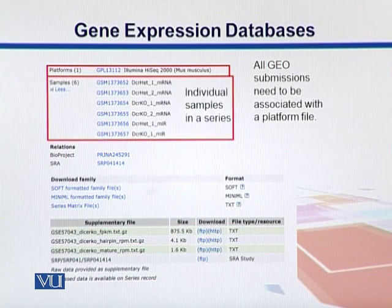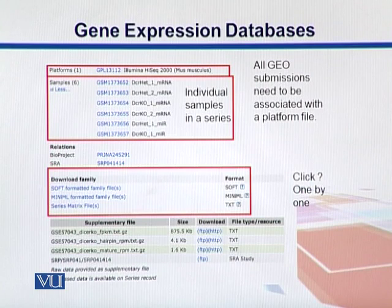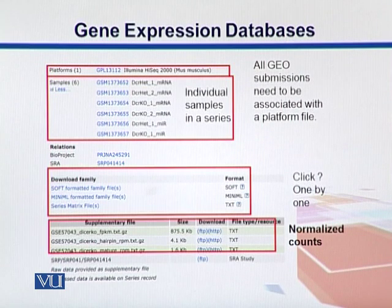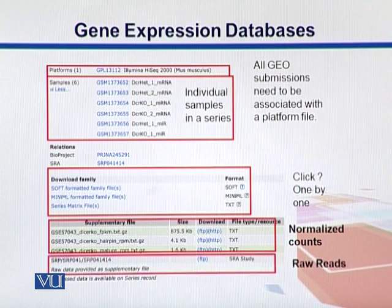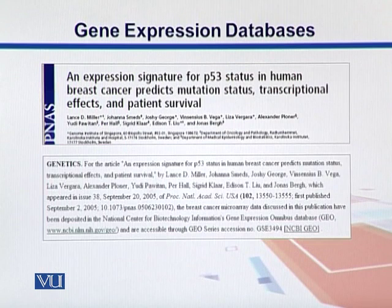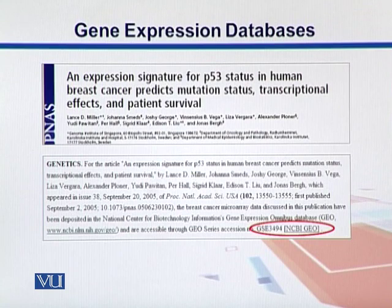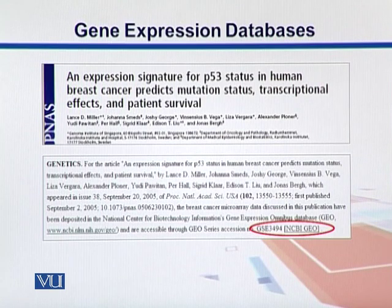There are six samples total in this dataset, with individual samples labeled as GSM. We can also download the expression counts or values in different formats. The normalized counts are in this box — normally they are compressed files — and the raw read data is present in SRA format, which stands for Sequencing Read Archive, and that stores the raw read data. Publications need to be mentioned since funding and publication agencies require your data to be submitted and shared with the community. Scientists can access this data using the GSE ID number, and if you are submitting a paper you need to provide this information.